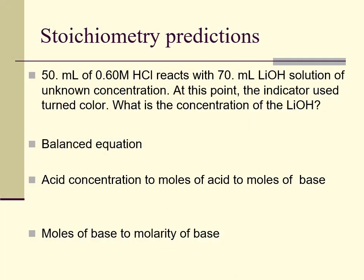So we set up the question: 50 milliliters of 0.6 molar acid reacting with 70 milliliters of lithium hydroxide, which is a strong base, but we don't know the concentration of the lithium hydroxide. When 50 mL of one is added to 70 mL of the other, the indicator we are using turns color — that's the end point, the equivalence point. So what is the concentration of the lithium hydroxide?